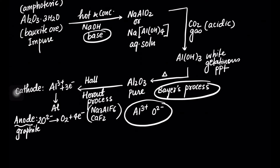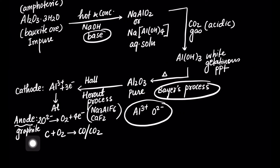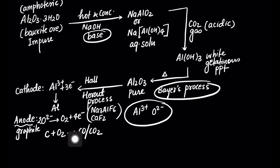The oxygen liberated at the anode will react with the carbon to form CO or CO2 gas, so the graphite rod will burn. From time to time we have to replace this graphite rod. Approximately, for one kg of aluminium production, half a kg of graphite rod is consumed.